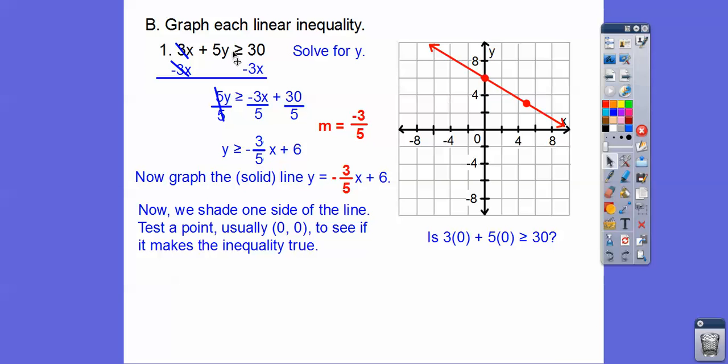3 times 0, I just put it into this inequality up here. 3x + 5y. So 3(0) + 5(0). Is that ≥ 30? No. So we shade the other side of the line. Since (0,0) is on this side, we're going to shade over there.